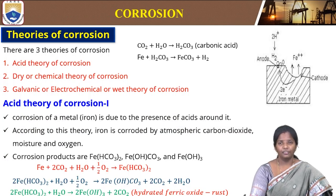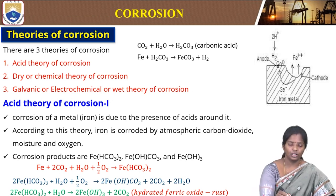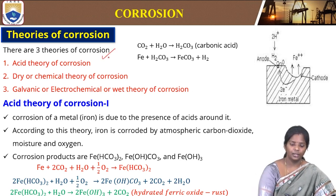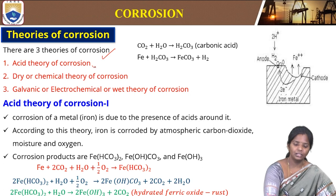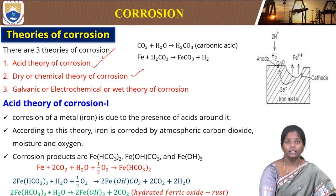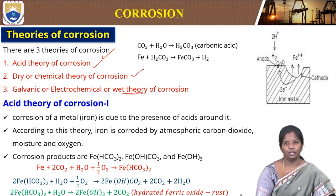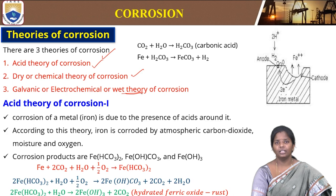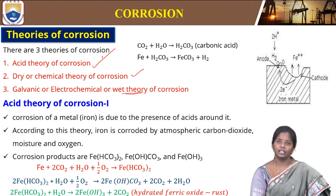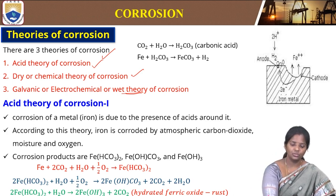There are different theories of corrosion that will explain the corrosion mechanism. There are basically three theories: acid theory of corrosion, then dry or chemical theory of corrosion, then galvanic or electrochemical or wet theory of corrosion. These are the three different theories that will explain the corrosion of any metals.